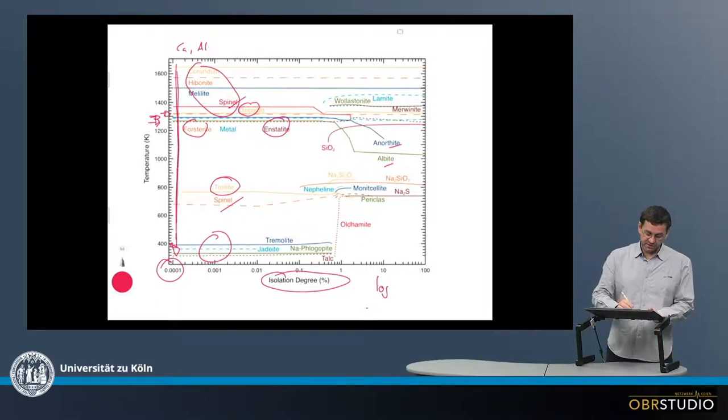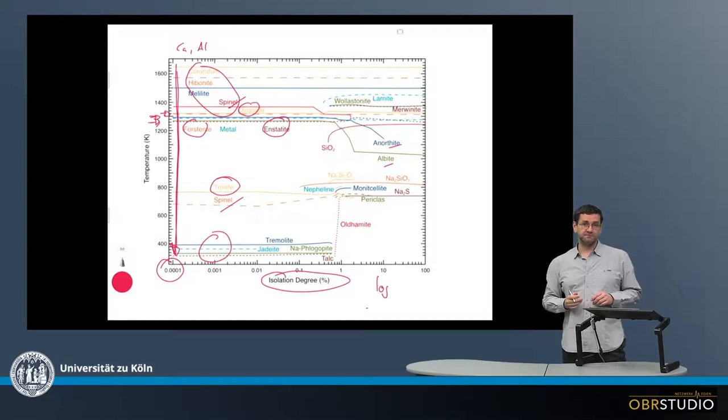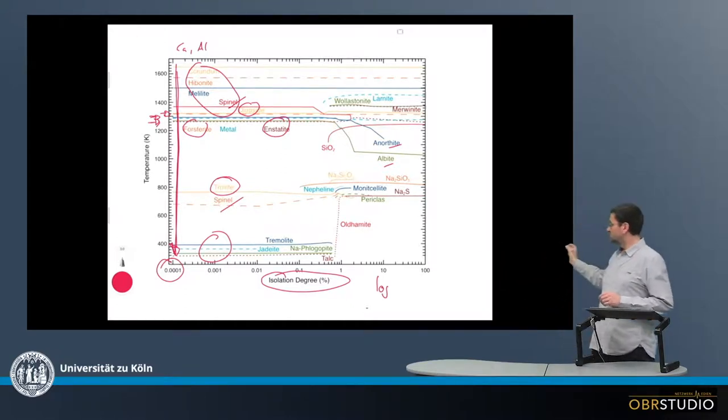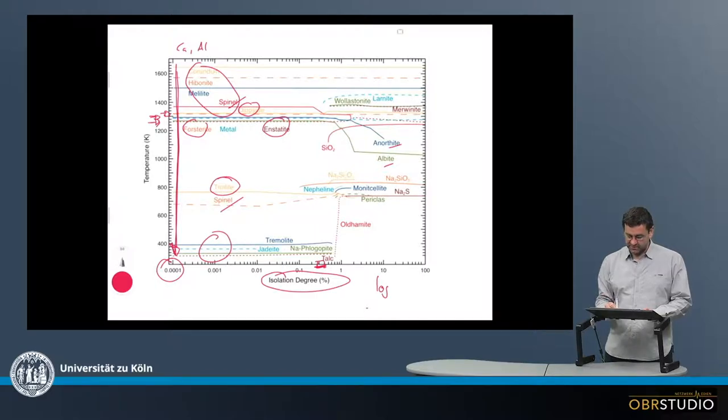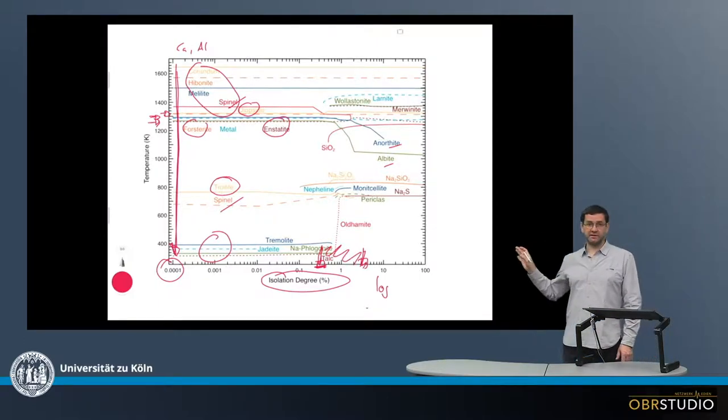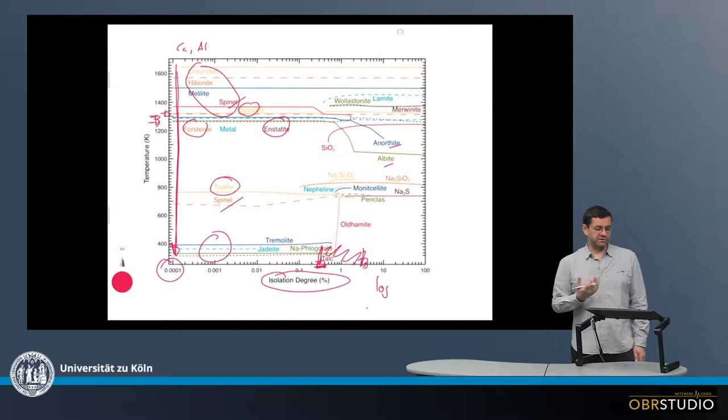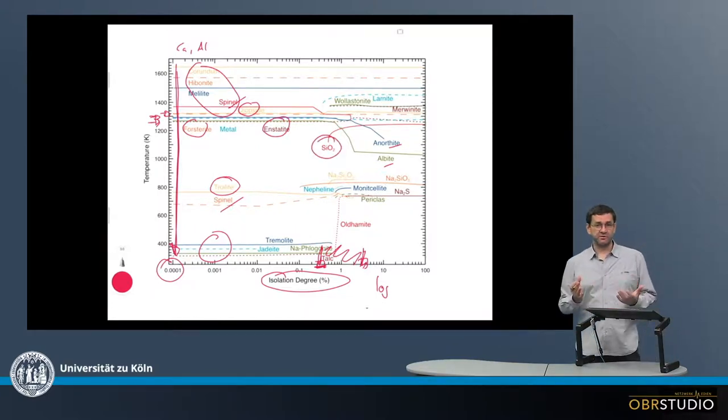And as I said, this is essentially then here the equilibrium condensation sequence. Now let's go to higher isolation degrees. And the interesting changes start at around something like 0.2 percent up to maybe something like 2 or 3 percent. So this is the interval in which the interesting changes take place. Now the maybe most important change here is the occurrence of silica, so SiO2.